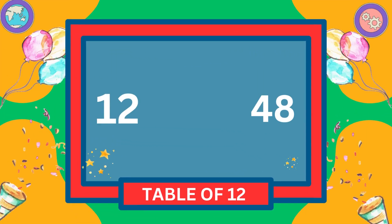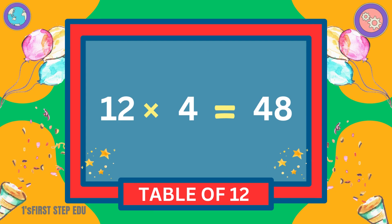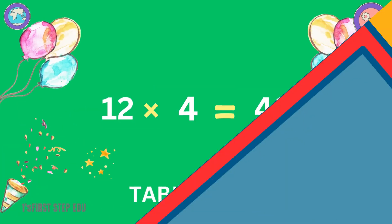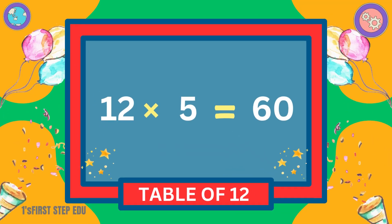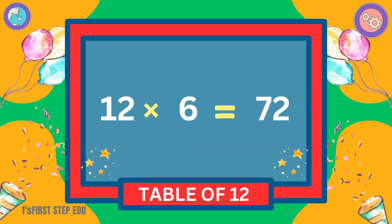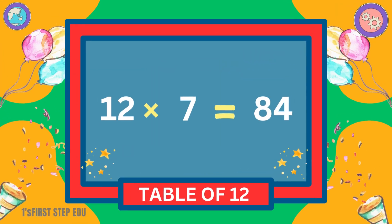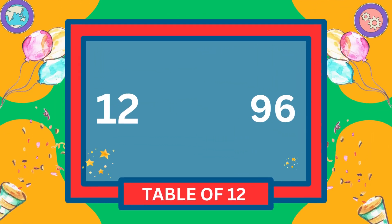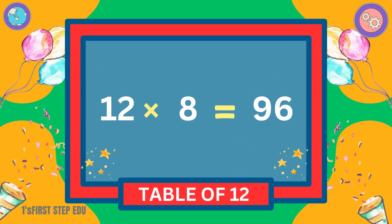12 fours are 48. 12 fives are 60. 12 sixes are 72. 12 sevens are 84. 12 eights are 96.